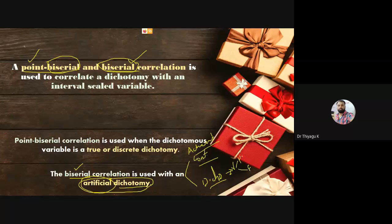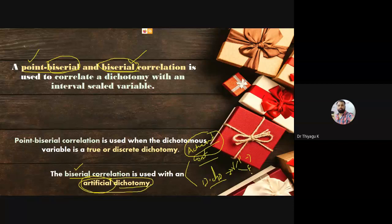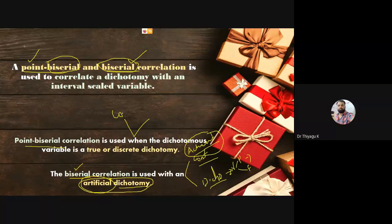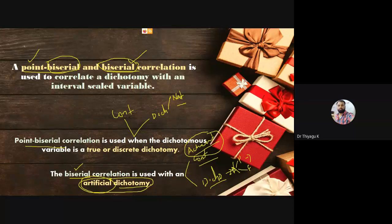For example: achievement mark as the continuous variable, and pass/fail of the previous semester as the dichotomous variable — this is artificial dichotomous, so we use biserial. If instead we use achievement mark (continuous) with gender male/female (natural dichotomous), we use point biserial. So: artificial dichotomous → biserial; natural dichotomous → point biserial.